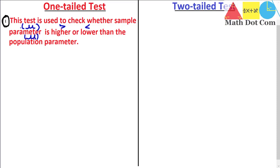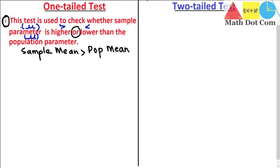We usually use a one-tailed test to check whether there is statistical significance in one direction or not. In a one-tailed test, we check whether the sample mean is greater than the population mean — and keep this in mind, this 'or' is very important, it is related to one direction. You are either checking whether the sample parameter is higher than the population parameter, or you are checking whether it is lower. So: sample mean is greater than population mean, or sample mean is less than population mean.